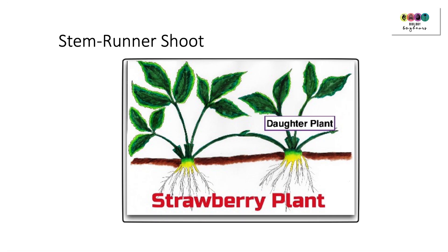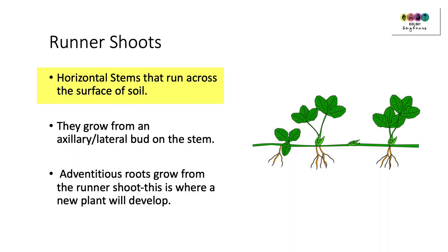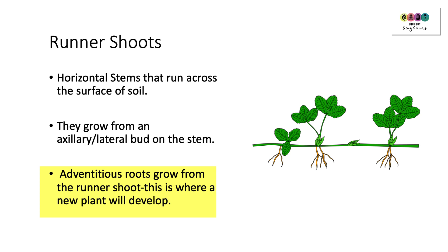Another example from the stem for natural vegetative propagation is that some plants produce runner shoots, and the strawberry plant is an example. Runner shoots are horizontal stems that run across the surface of the soil, and they grow from an axillary or lateral bud on the stem of the main parent plant. Adventitious roots will grow from the runner shoot, and this is where the new plant will develop, and then those runner shoots will eventually break away, leaving you with an individual new plant.